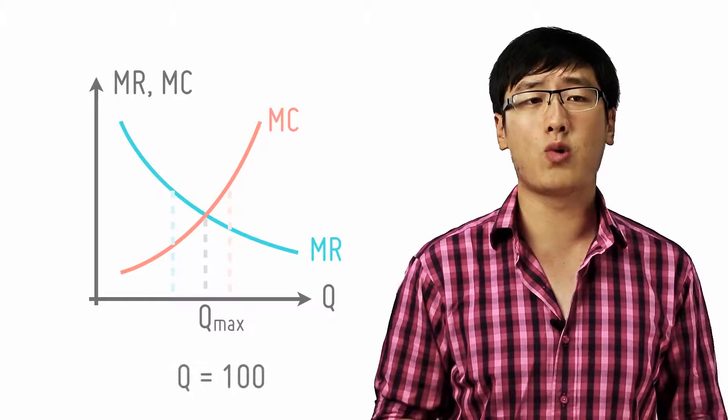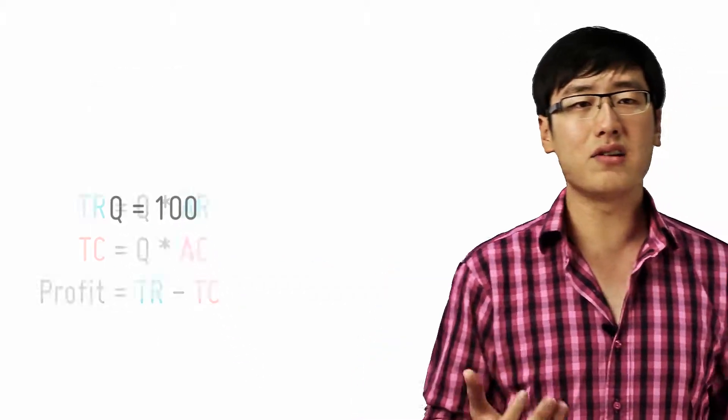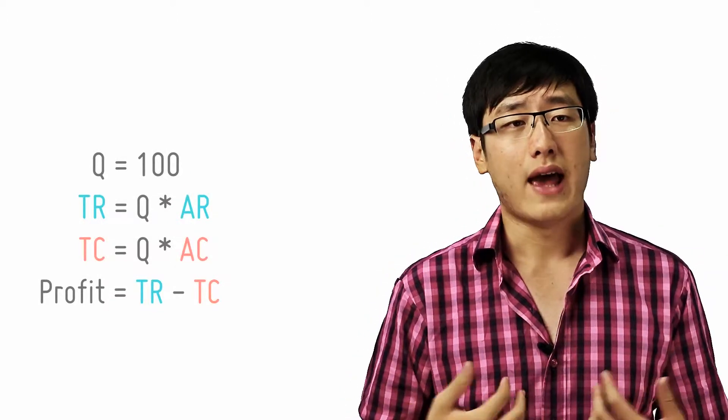So all you need to do is find a quantity at which MR equals MC. Let's say it's 100 units. And at 100 units, you take 100 times the AR, which gives you total revenue, and you take 100 times the AC, which is your total cost.